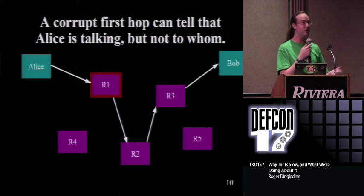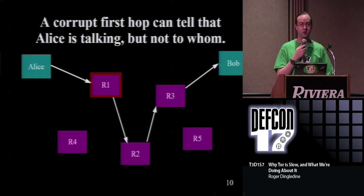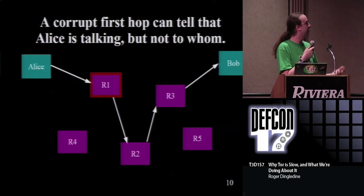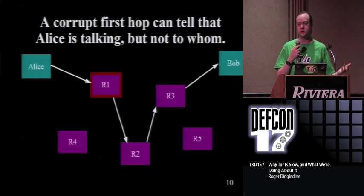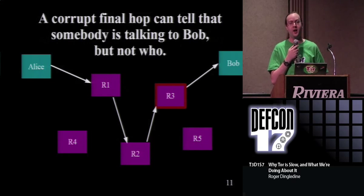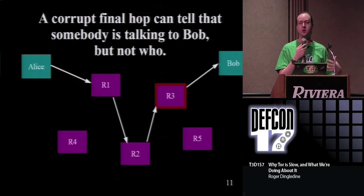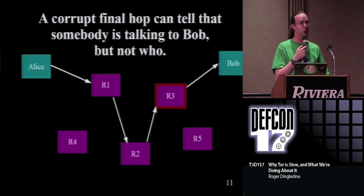If R1 is bad, then he knows that Alice is using Tor, but he just doesn't know what she's doing. And if R3 is bad, he knows that somebody is talking to Bob, but he doesn't know who. And if they're both bad, then we're screwed.